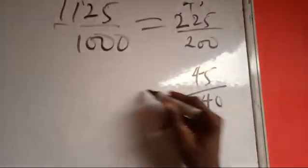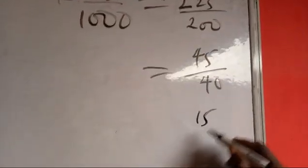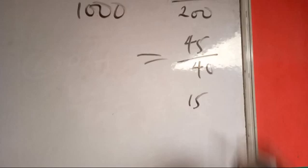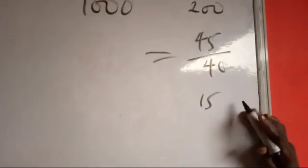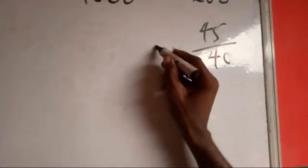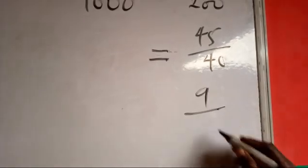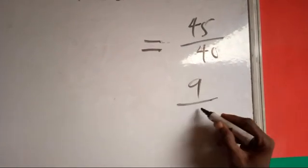Now reducing this, I think something can go. 5 goes into 45, we are going to be having 9, 5 goes into 40, I think we'll be having 8. Yes, therefore this is 9 over 8.